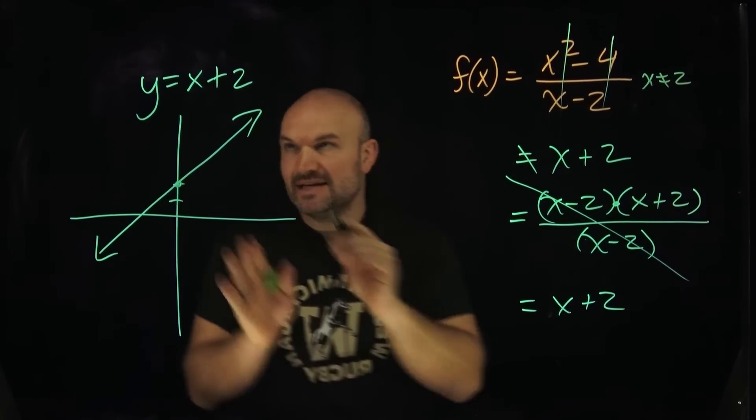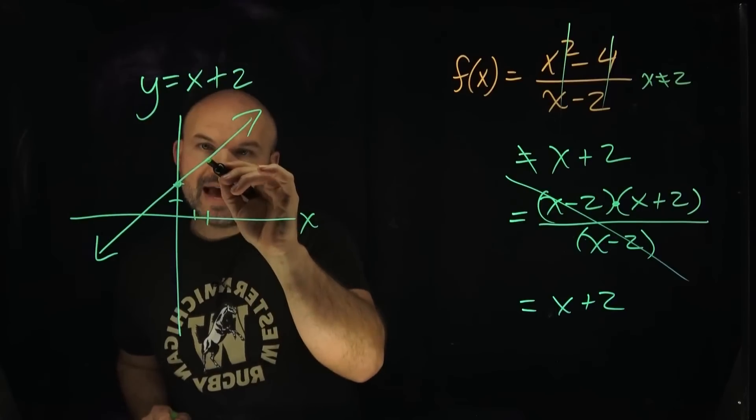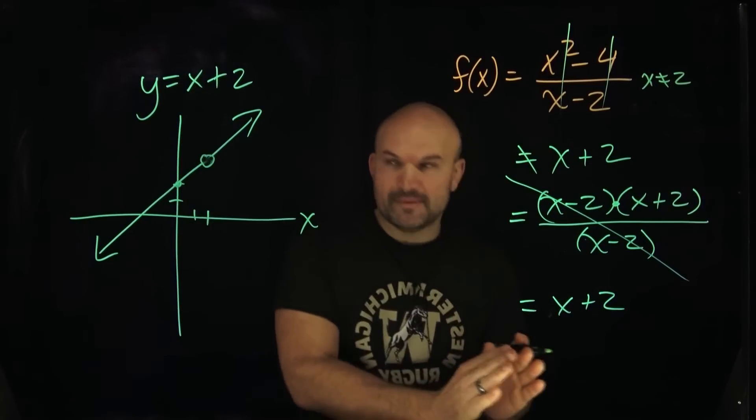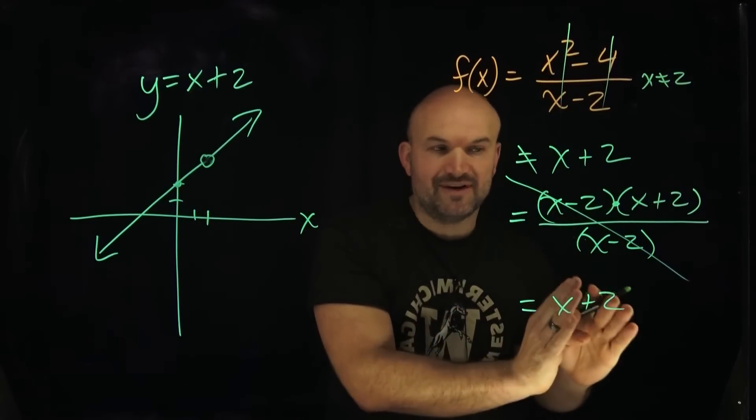So what that means is when I go over to my equation, right, here's my x-axis, go over to 2, that is going to be represented by a hole. So a hole, remember, is what we call a removable discontinuity. Through the simplifying process, it can be simplified.